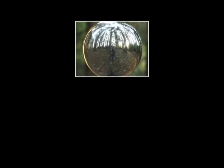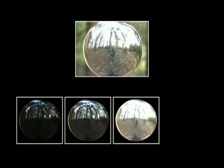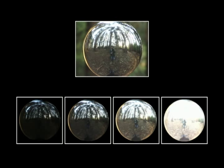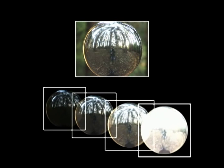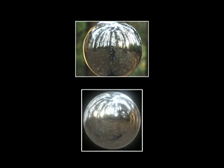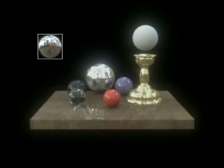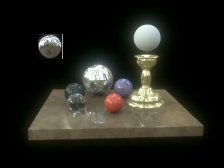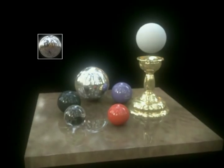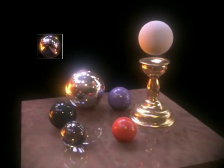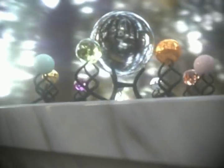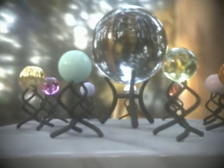Image-based lighting allows us to simulate synthetic objects with real light. We capture the light by taking a series of images of a mirrored ball, which records the color and intensity of the light coming from every direction. We then use a global illumination algorithm to simulate this captured illumination falling on synthetic objects. We use this technique to create the animation Rendering with Natural Light at SIGGRAPH 98.